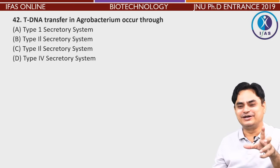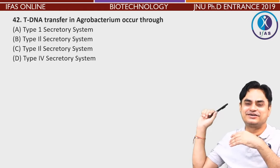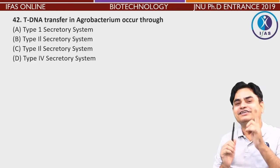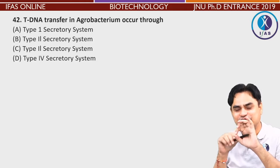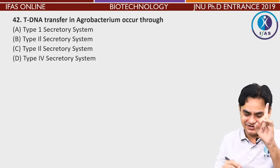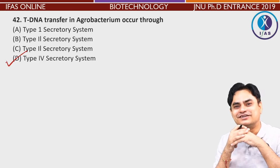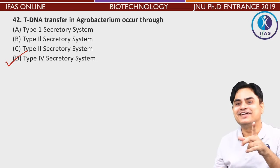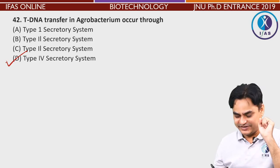T-DNA transfer in Agrobacterium occurs through Type 4 secretory system. The conjugation between Agrobacterium and plant cells uses this system. If you're not sure, please review the videos available on YouTube channel covering Agrobacterium in detail.